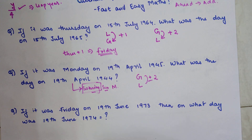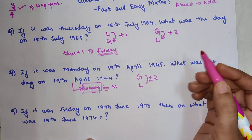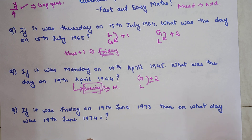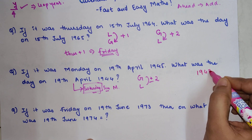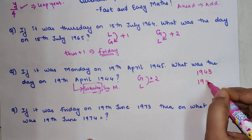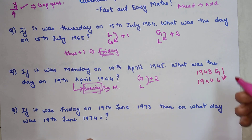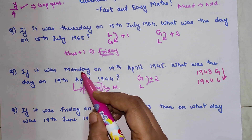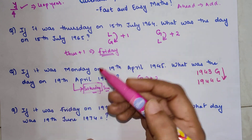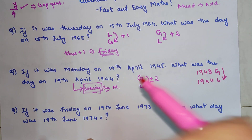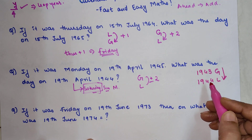Just to clarify — because we went behind, we subtracted. Now if the question had been from 1943 going forward to 1944 — which is also a general-to-leap scenario — you would be going ahead, so you would add 2. From Monday, adding 2 gives Tuesday, then Wednesday. The answer for that version of the question would have been Wednesday.